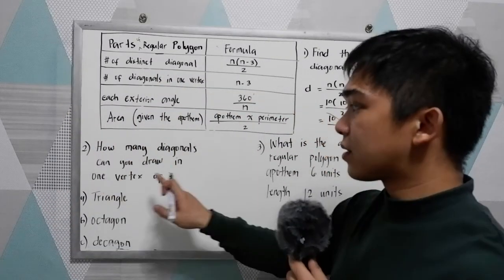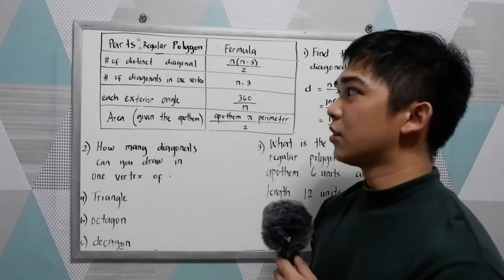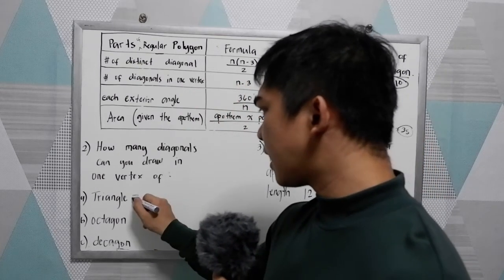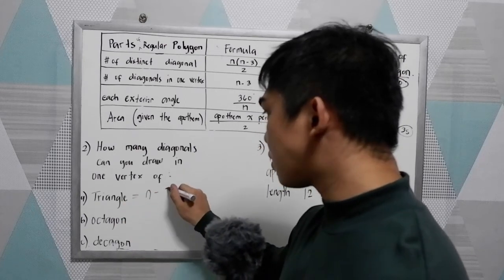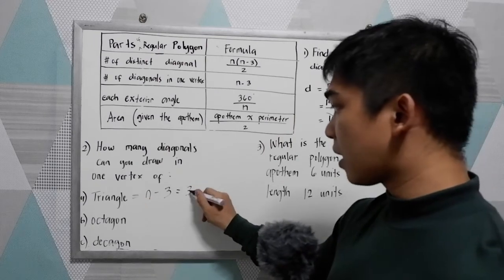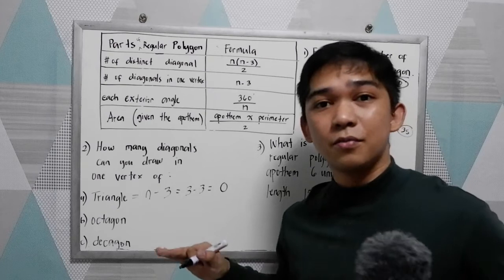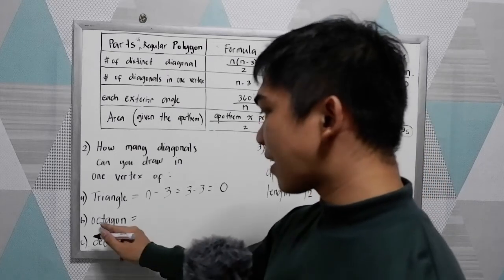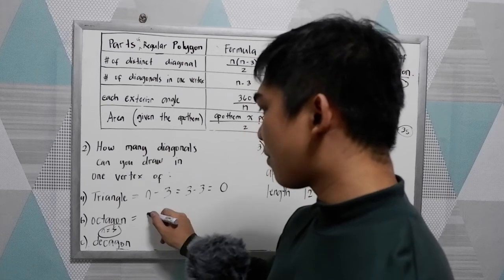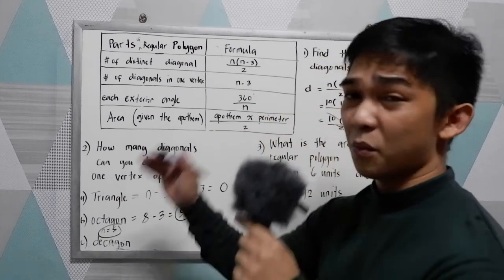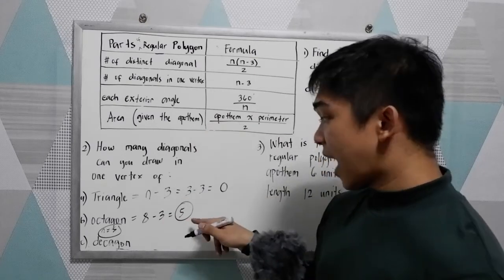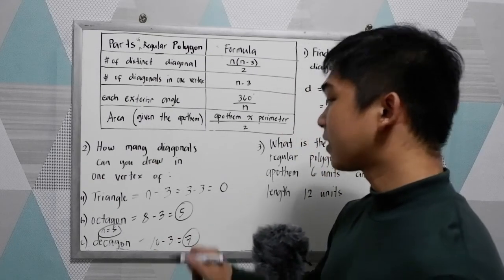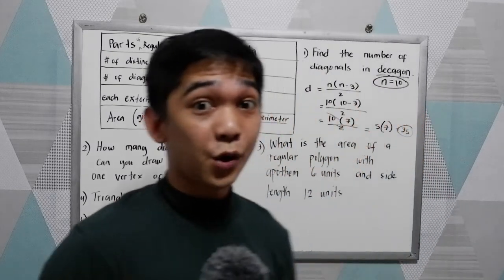Number 2: how many diagonals can you draw from one vertex? We use the formula N minus 3. For a triangle, N is 3, so 3 minus 3 is 0 — we have no diagonals in a triangle. For an octagon, N is 8, so 8 minus 3 is 5 — you can draw 5 diagonals from one vertex. For a decagon, 10 minus 3 is 7, so you can draw 7 diagonals from one vertex.